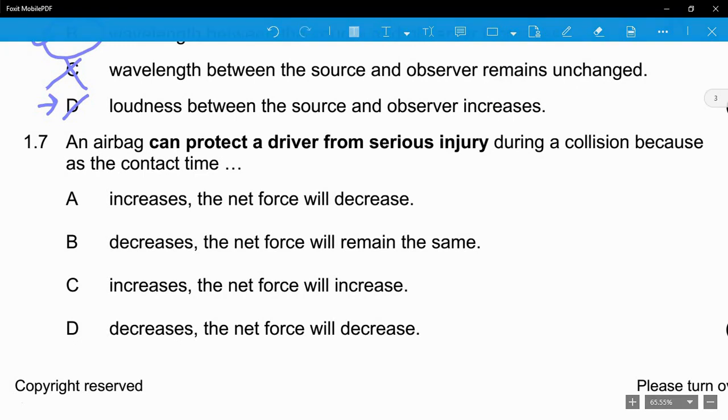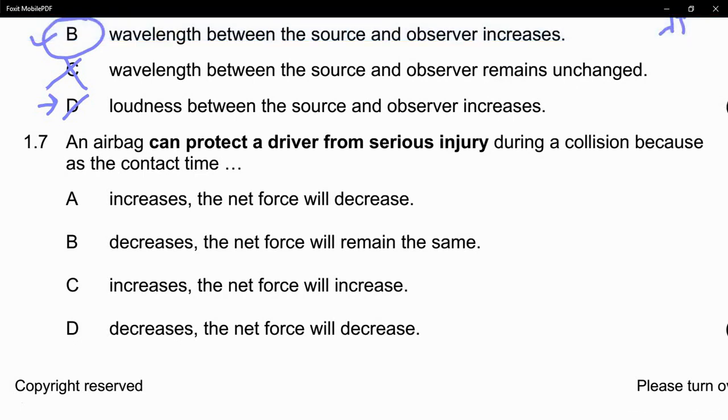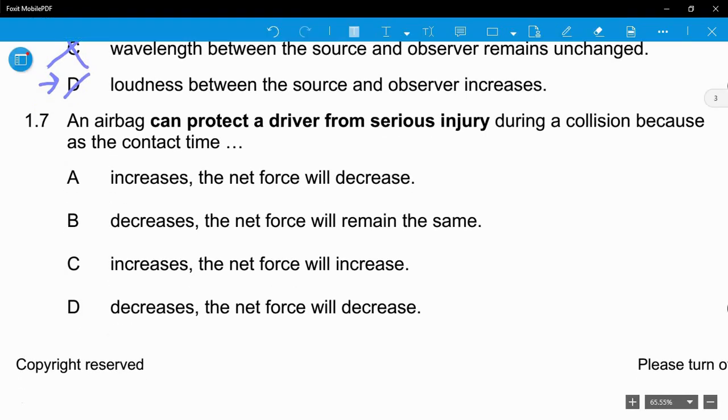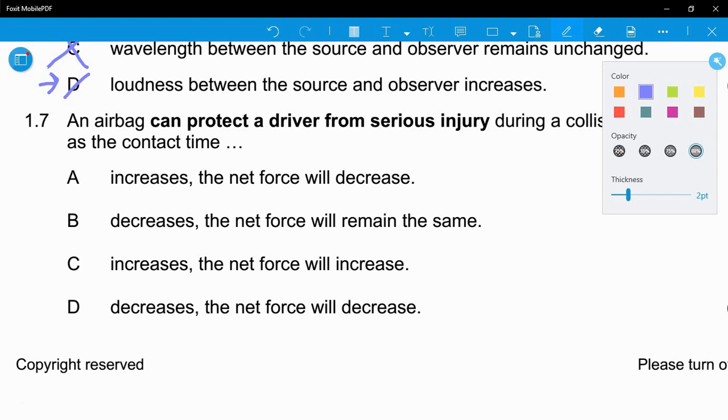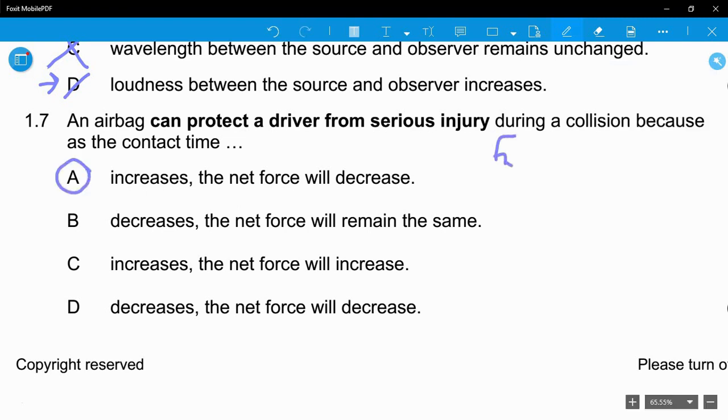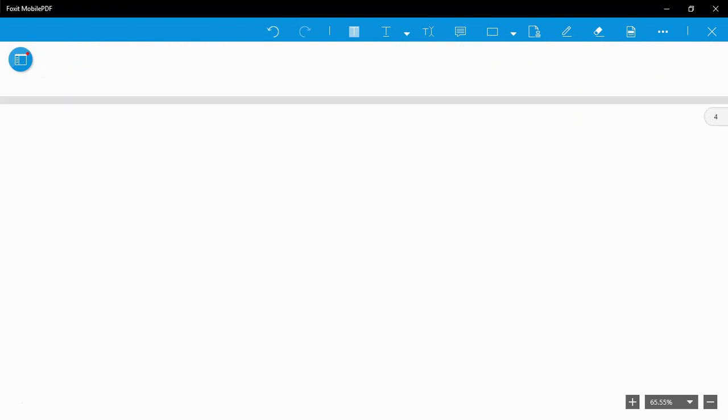Question 1.7: An airbag can protect a driver from serious injury during collision because as the contact time increases, what happens? You should know this already. This is quite straightforward - it's the whole point of an airbag, to reduce the amount of force on the person. If you look at our momentum equation above, our rate of change in momentum, you'll see that if contact time increases, therefore net force decreases. Remember, F net equals change in P over change in T. We've got an increase in change in T at the bottom, that means the fraction itself gets smaller, which means F net goes down. So the net force decreases.